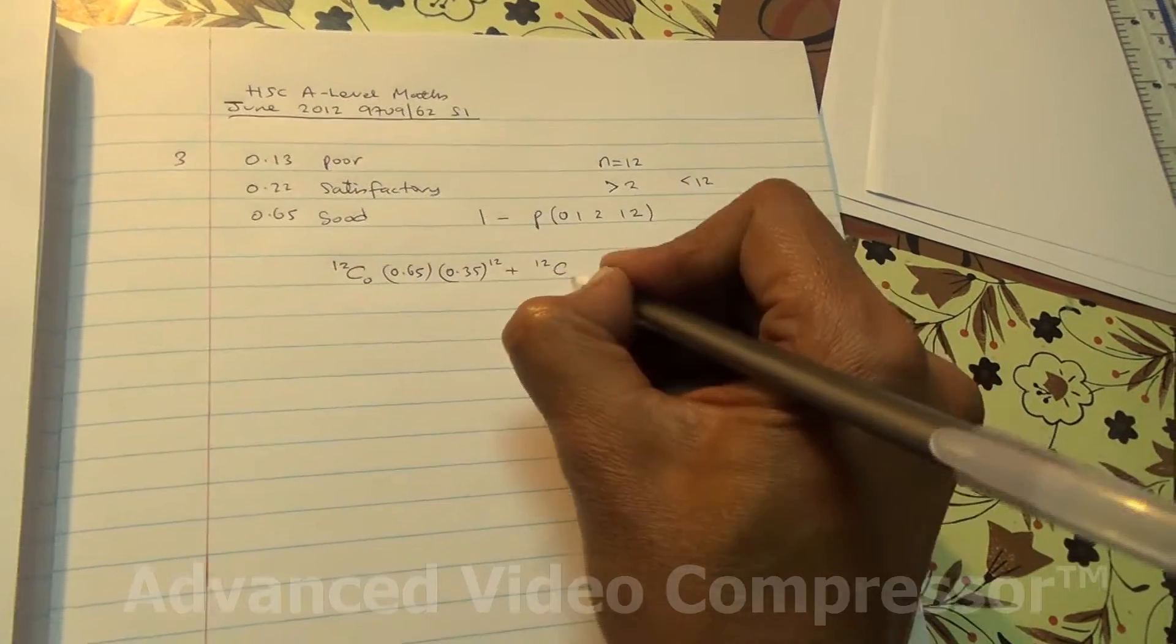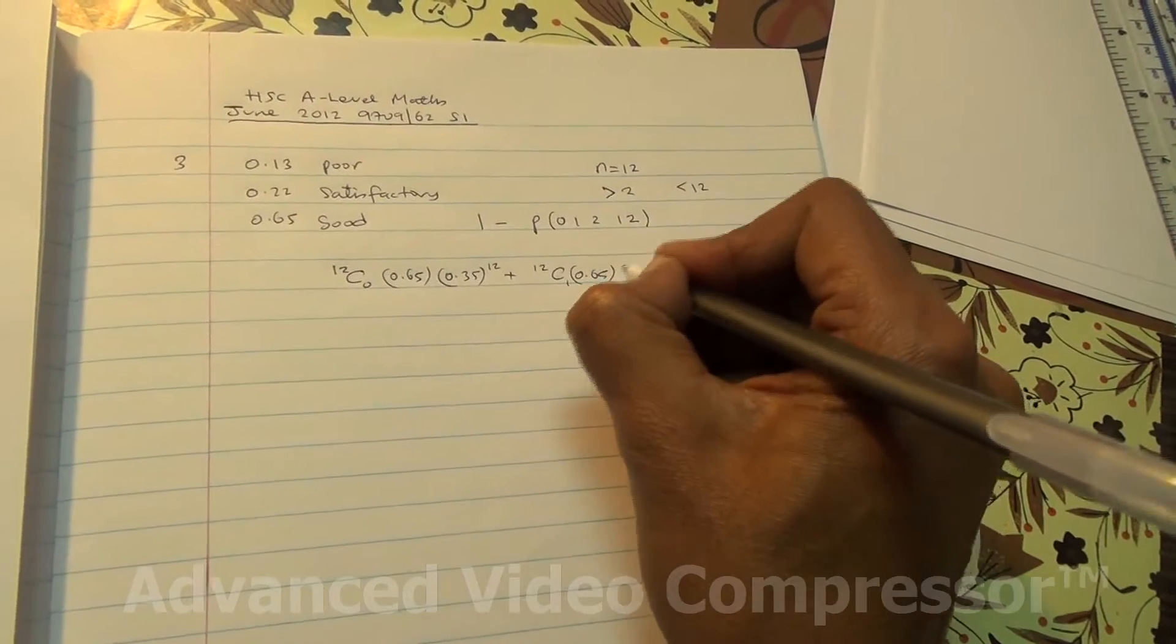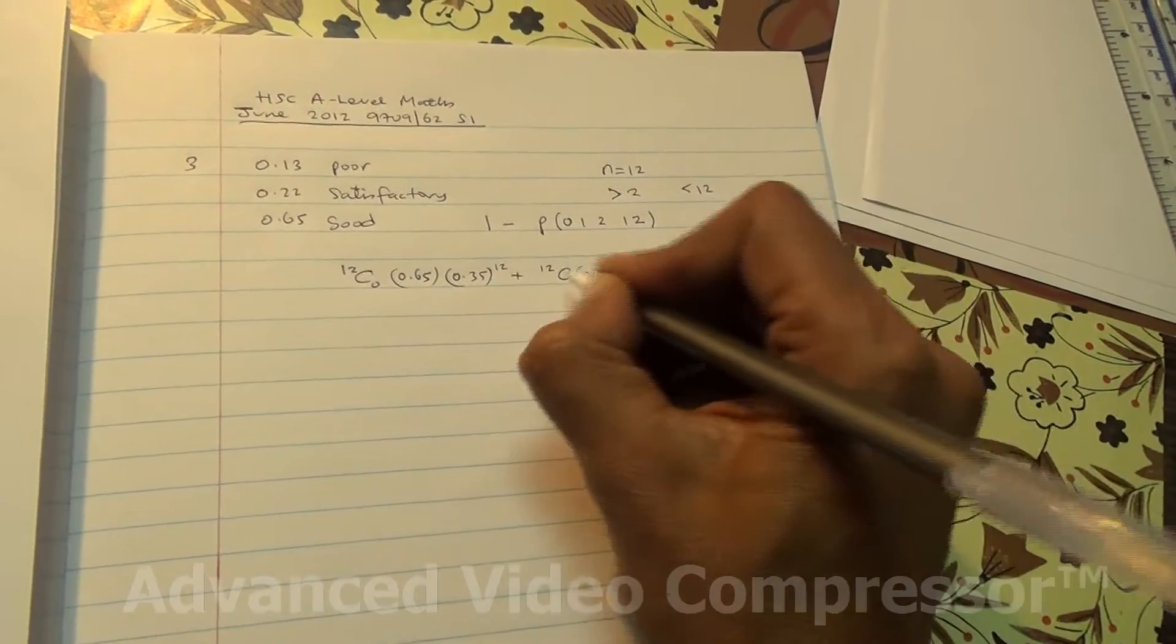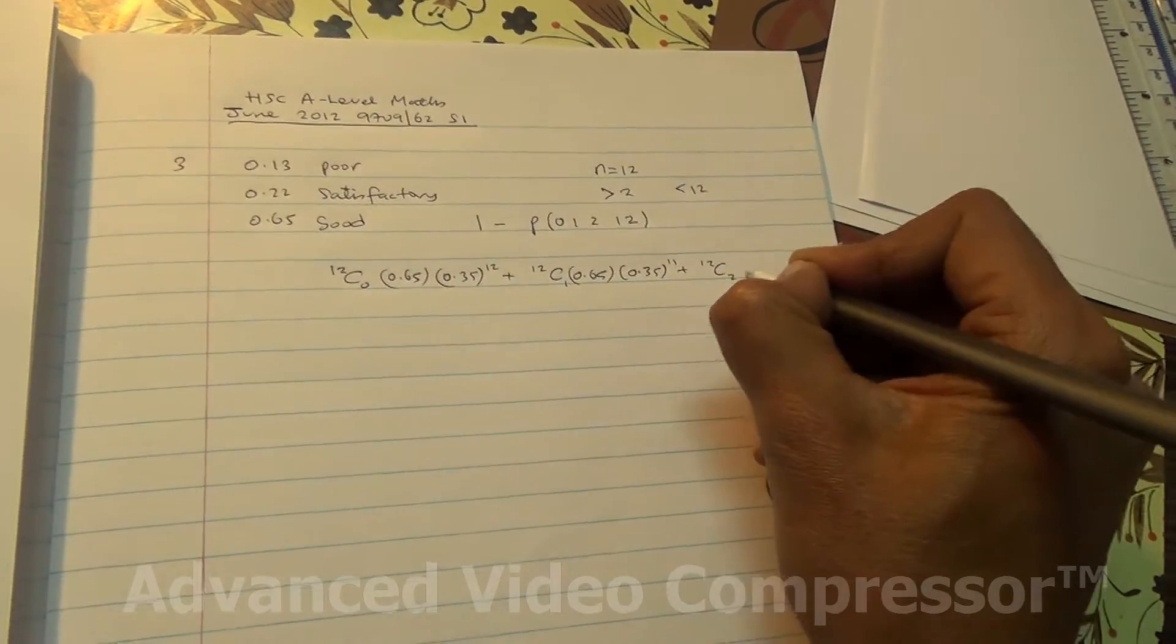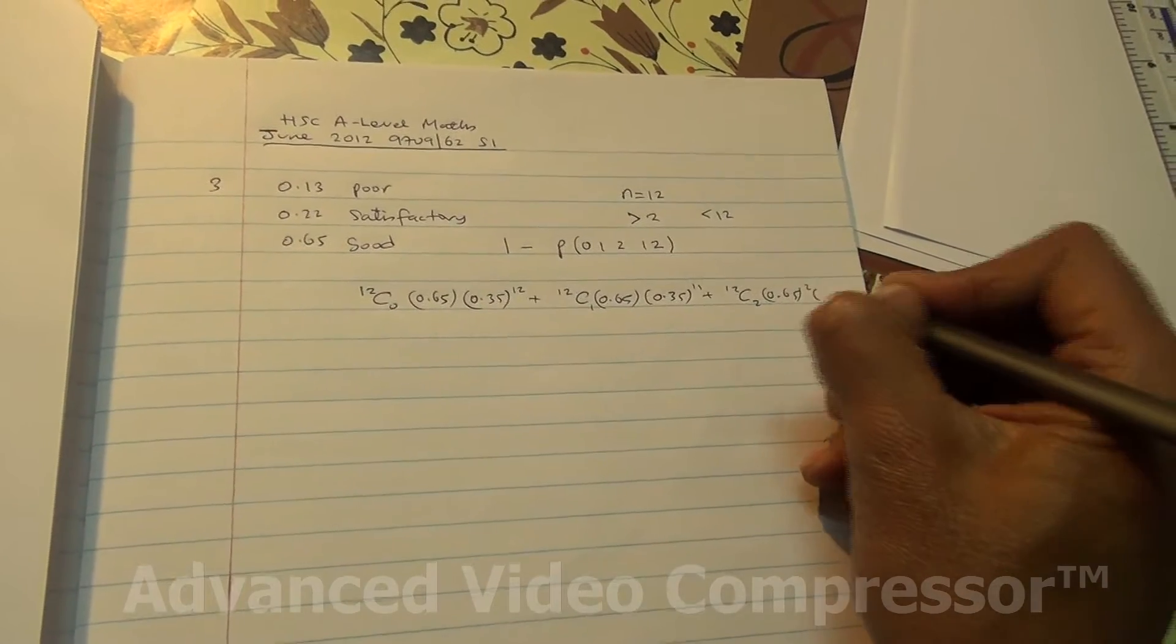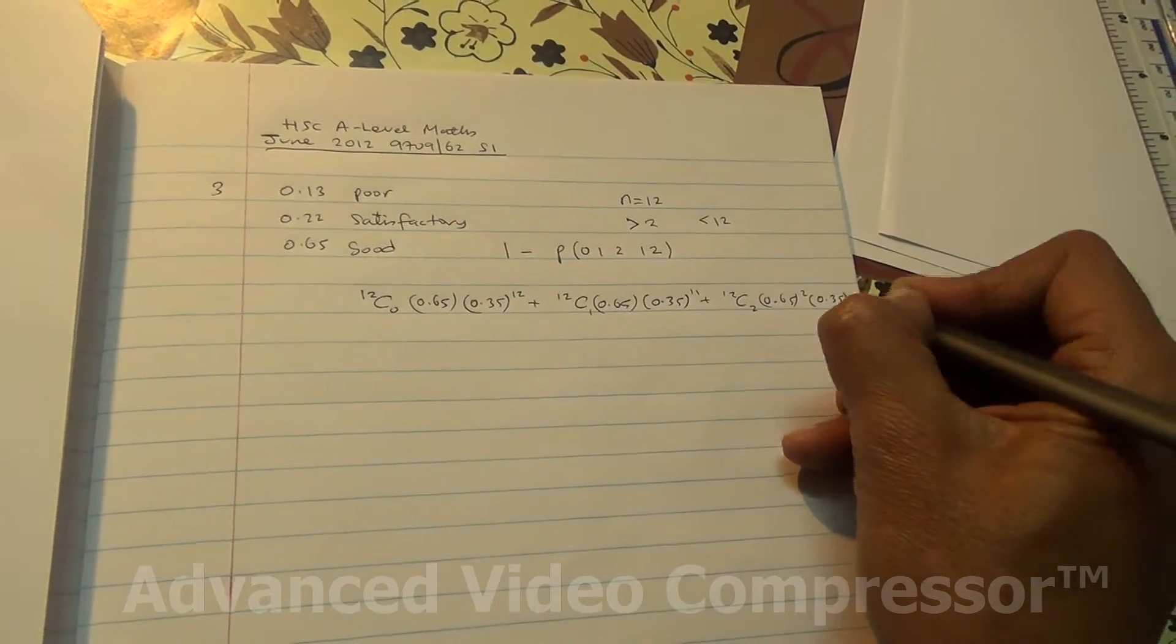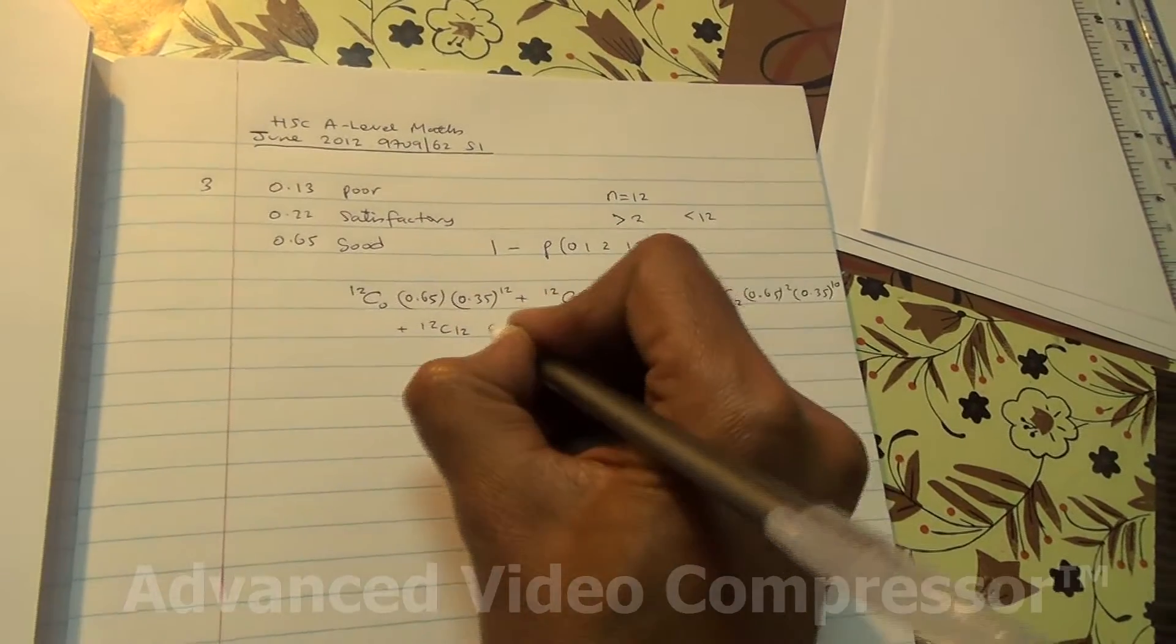plus 12C1, times 0.35, 12 minus 1 is 11, plus 12C2, 0.65, to the power of 12,